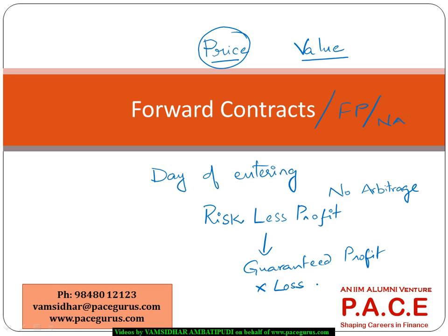Generally in the finance world, high profits come with high risk — high risk means high chances of loss also exist. Only when you take that kind of risk is there a possibility of making higher profit. But when talking about no-arbitrage profit, it is more like making a profit without incurring any loss.